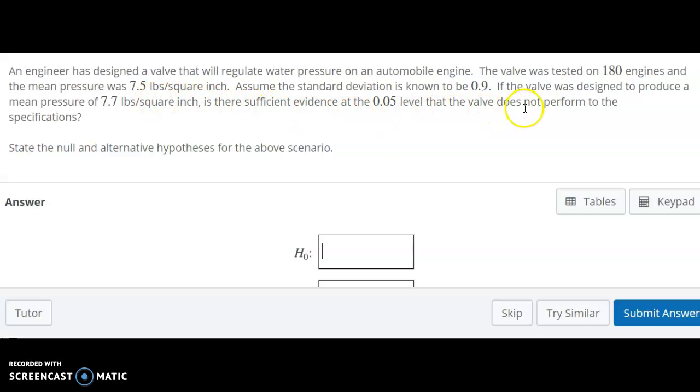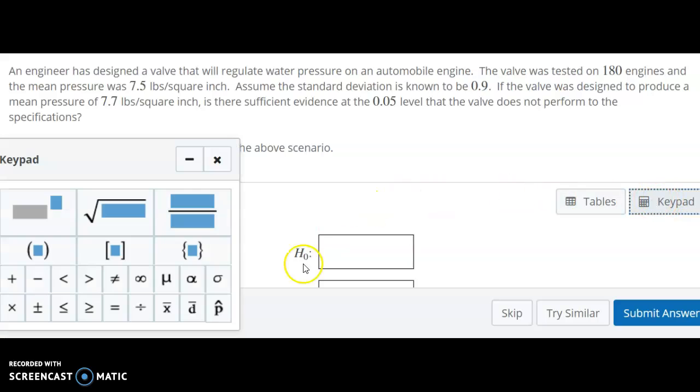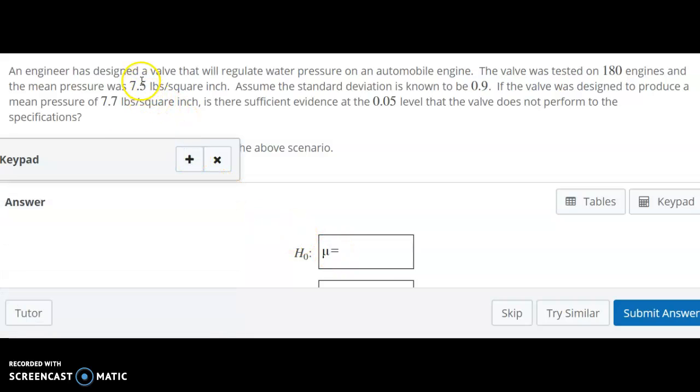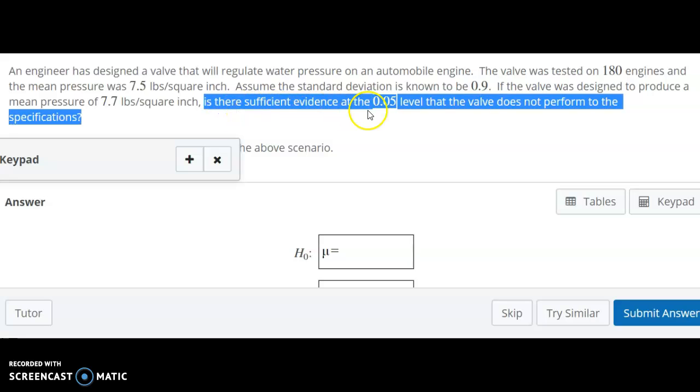So here, again, we have a mean. Let me go ahead and put that in there. And as always, the null hypothesis should be an equals. The question here is, do we put the 7.5 or the 7.7? So here's where we have to look closely at what the actual claim or what are we actually testing? Here's the research question. Is there sufficient evidence? This is our alpha level of significance. So it's not playing in here yet.